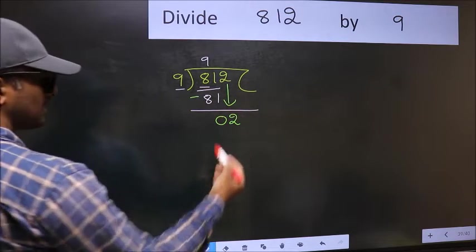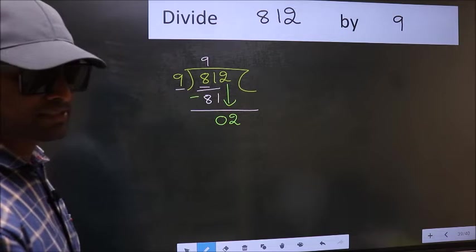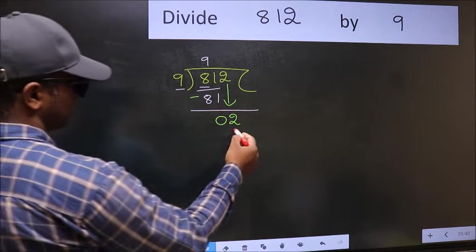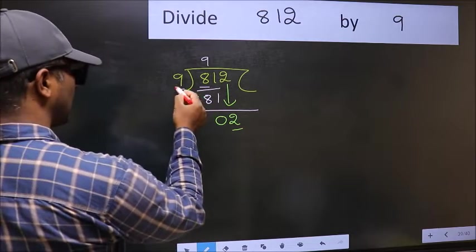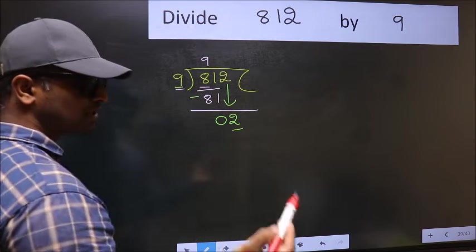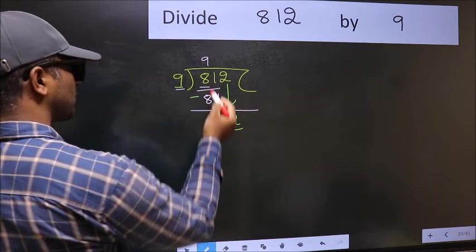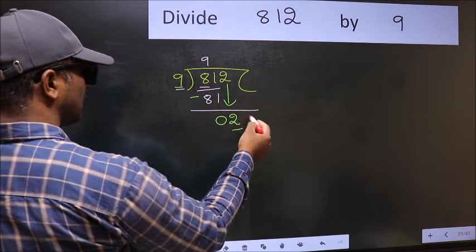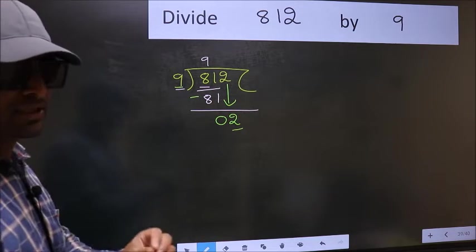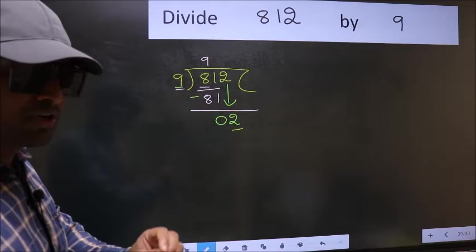After this step, the mistake happens. And the mistake is this. Here we have 2 and here 9. 2 is smaller than 9. So what many do is, they directly put dot and take 0. Which is wrong. Why is it wrong?